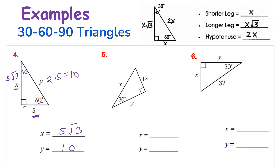Let's look at the next example. I have a 30 degree angle, so I'm given my shorter leg of 14. My hypotenuse is twice the shorter leg, so two times 14 equals 28. My longer leg is the square root of three times the shorter leg, so 14 times the square root of three. Therefore x equals 28, which is my hypotenuse, and y equals 14 times the square root of three.